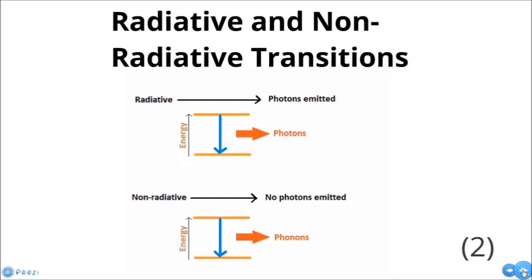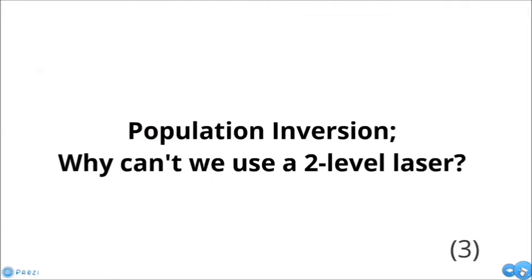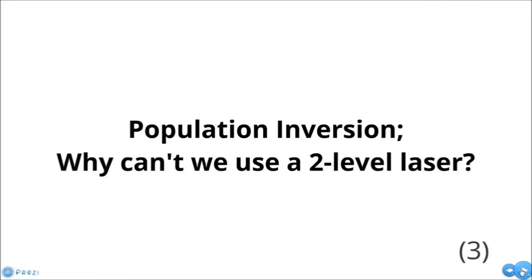In radiative transitions, an incoming photon stimulates the transition of the atom to a lower energy state than the one it's in. Thereby, a photon is produced via stimulated emission as the atom loses energy in the form of this photon to join the incident photon.